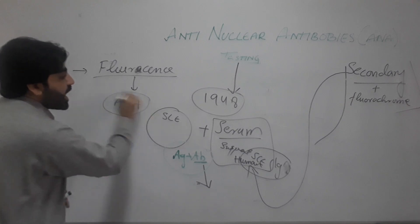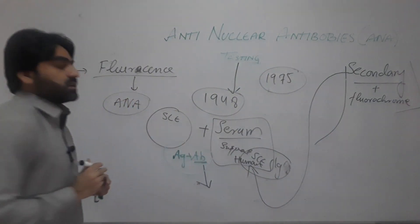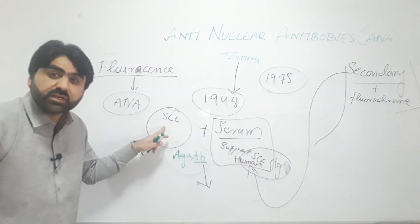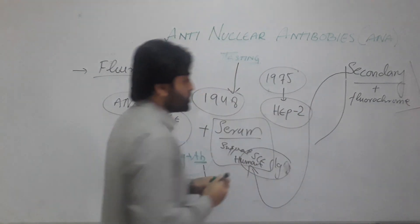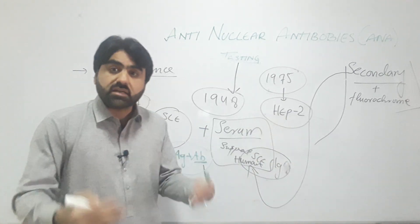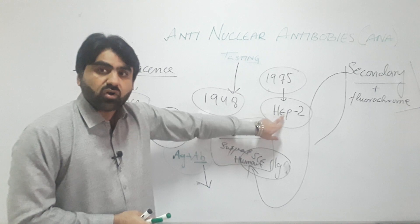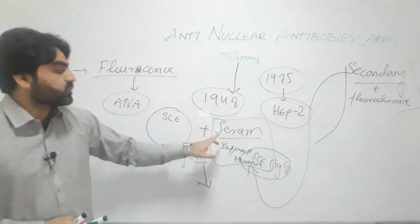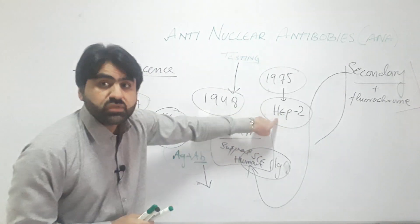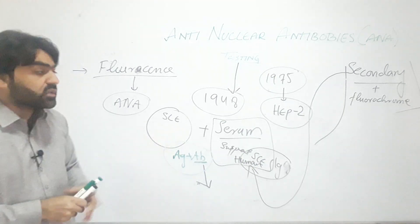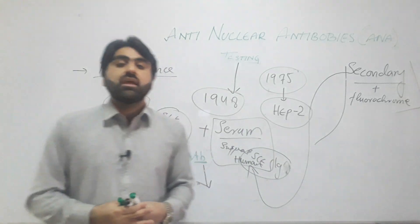More recently — in 1975 — the cell isolated from SLE patients was replaced by another cell known as HEp-2. HEp-2 is a human epithelial carcinoma, or human epithelial tumor cell line. This cell is now recommended by the American College of Rheumatology as the gold standard for detection of anti-nuclear antibodies in patient serum. The procedure is similar, but HEp-2 cells are used instead of SLE cells. This method is known as indirect immunofluorescence and is used as a screening test for the diagnosis of autoimmune diseases.